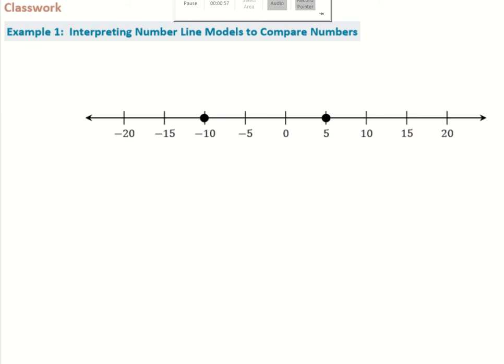Up first we have the classwork. Example one is going to be all about interpreting number line models to compare numbers. As you can see, there's a number line in front of us going from negative 20 all the way up to 20, with two points labeled at negative 10 and 5. Example one wants us to look at these numbers and think of a situation that might use those numbers — just like at the end of our lesson yesterday where we wrote our own word problem.